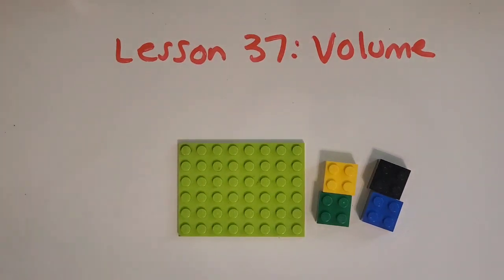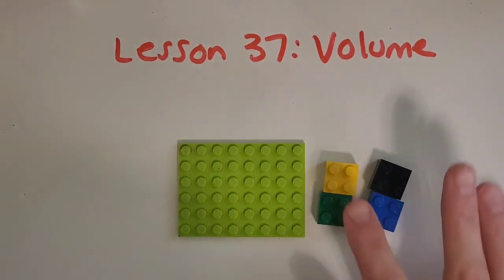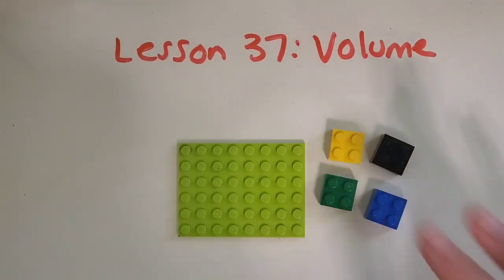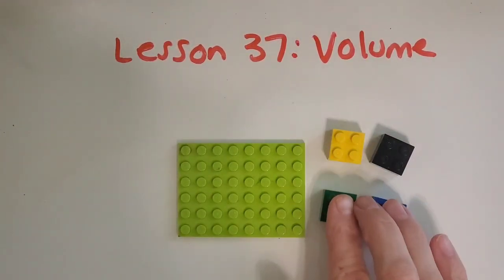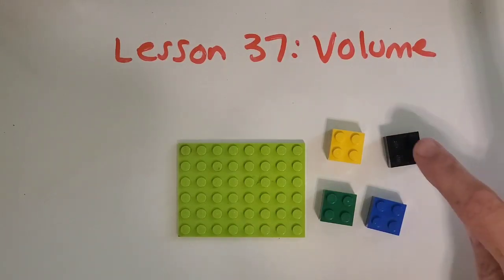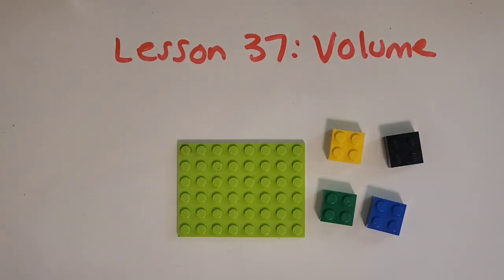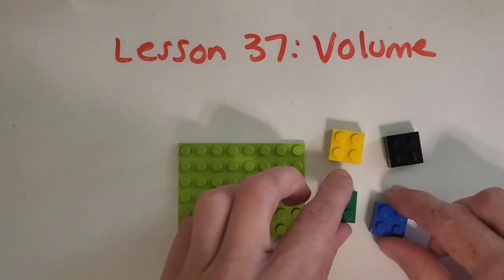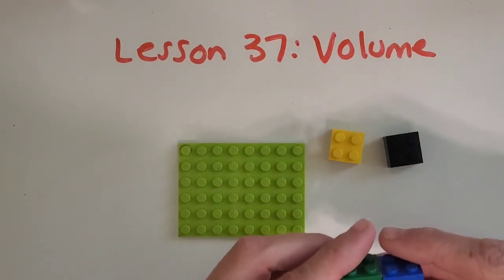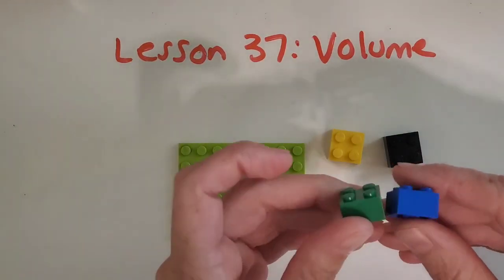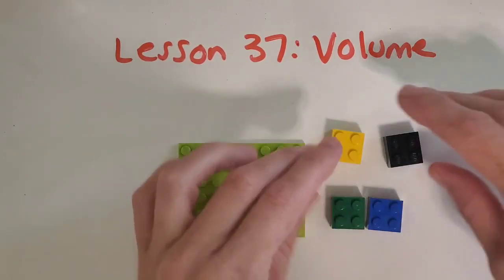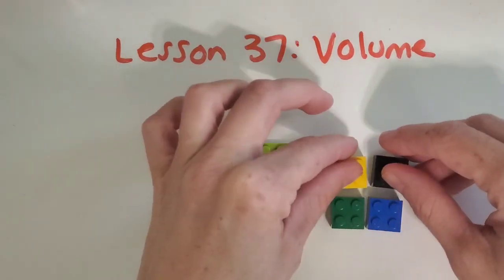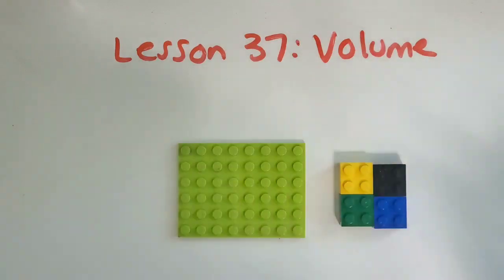I'm going to start teaching you about volume by using some Legos, and we're going to be looking at different 3D shapes that have different layers. That's kind of the best way to start learning about it. So let's say we have these blocks right here, and I'm just going to make a base layer of four blocks.